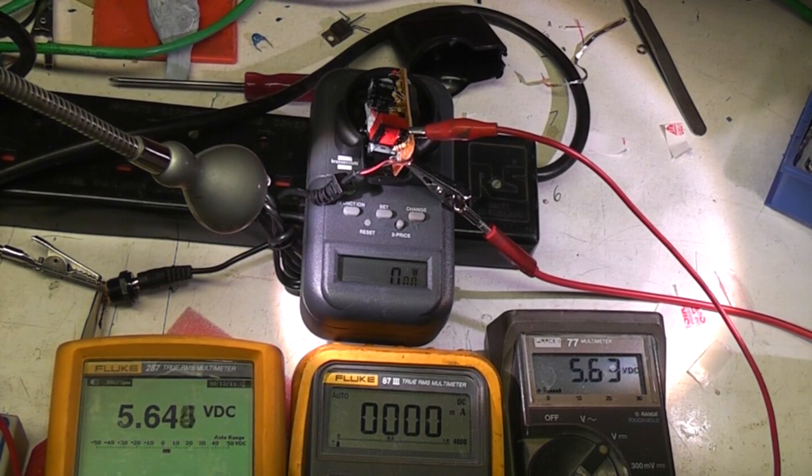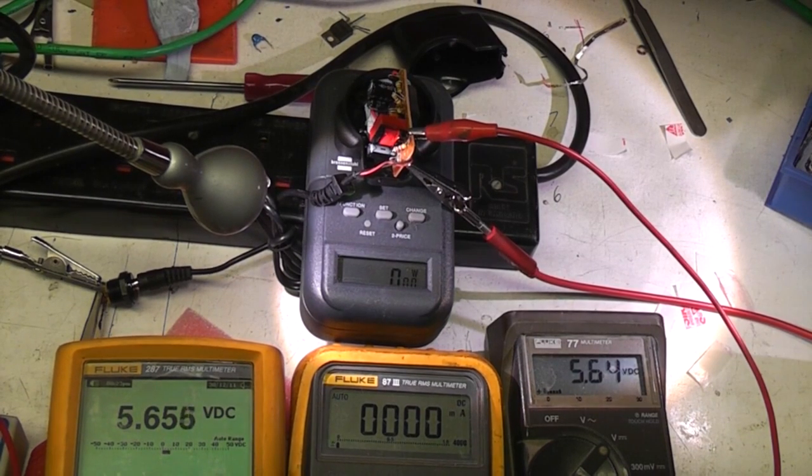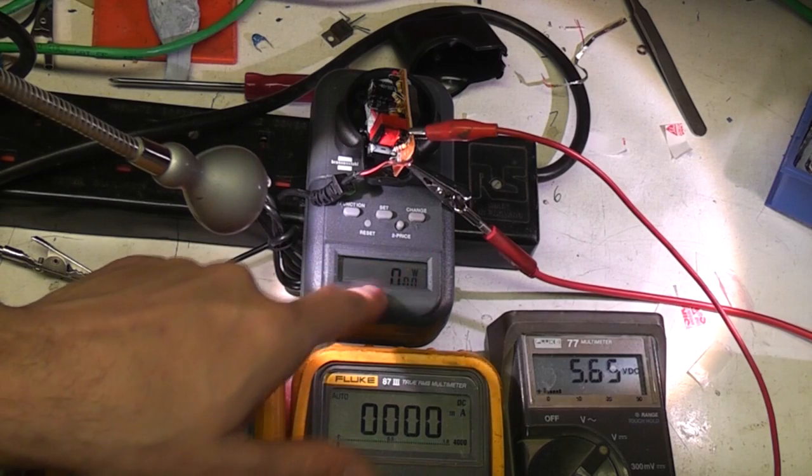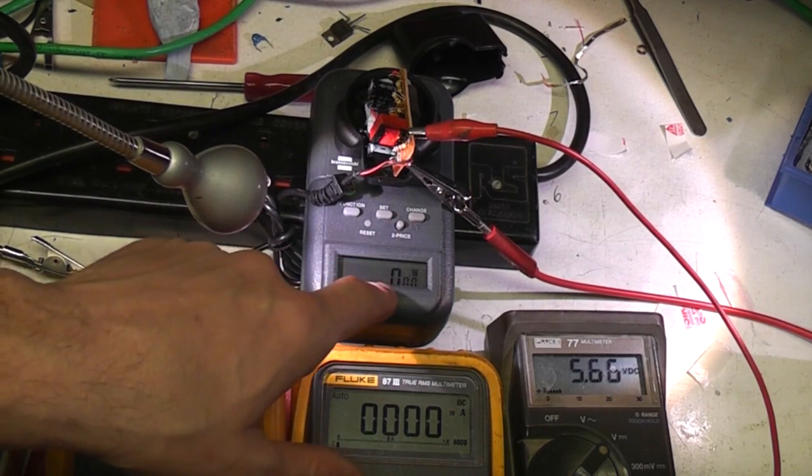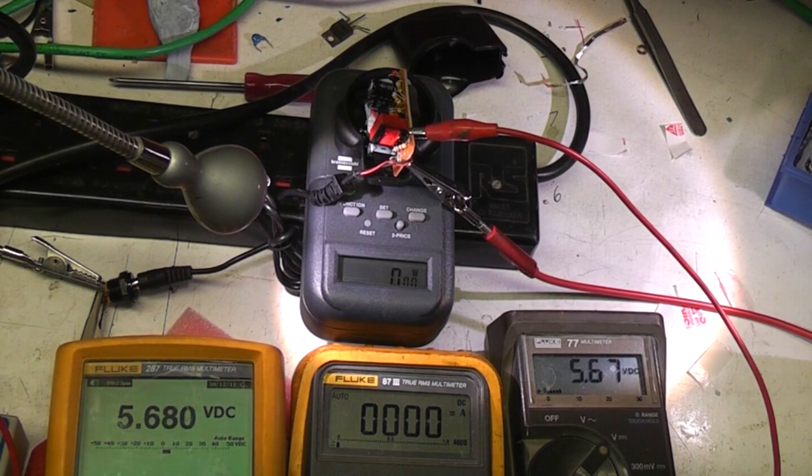Right, no load 5.65 volts, bit on the high side but not a major problem. This power meter showing zero now I suspect it could be the power meter just will show zero below a certain value to avoid giving an inaccurate reading right at the bottom of its range so I don't totally believe that. So let's give it a bit of load see what happens.